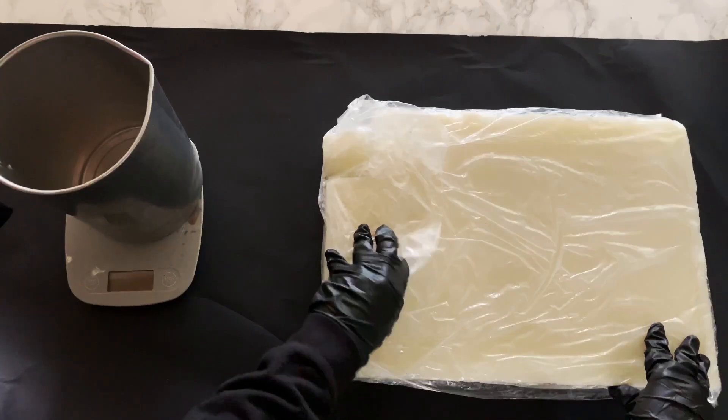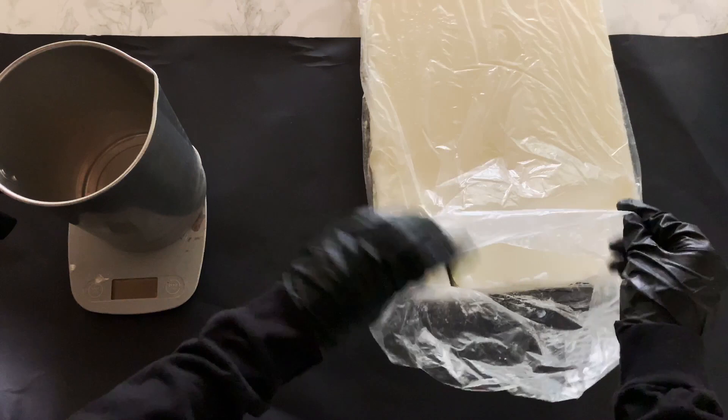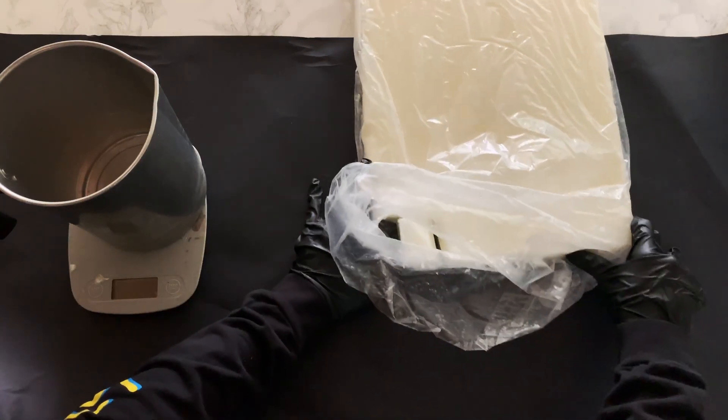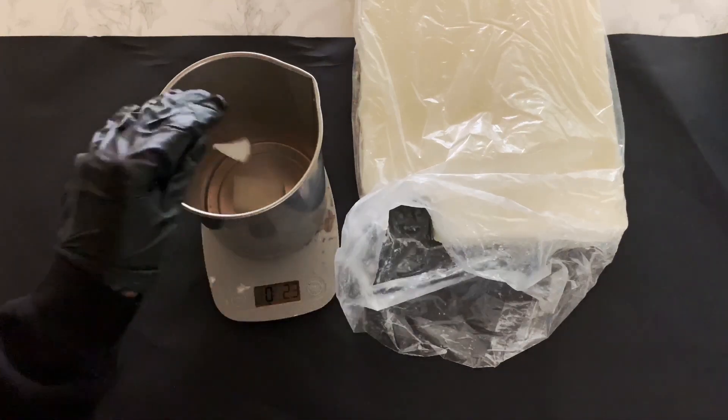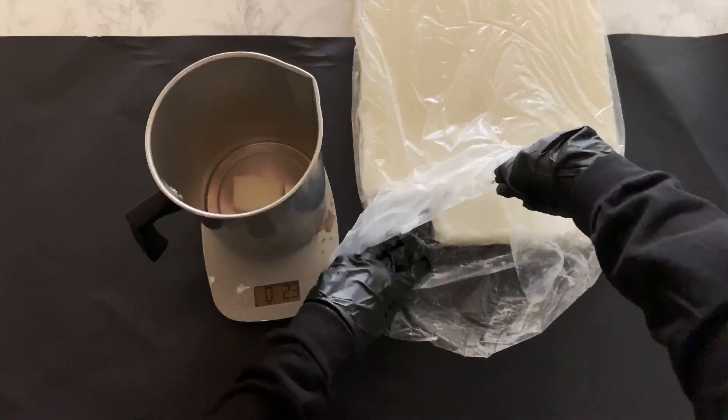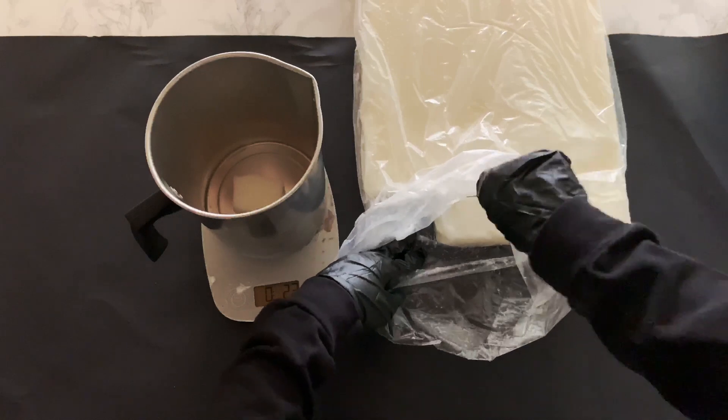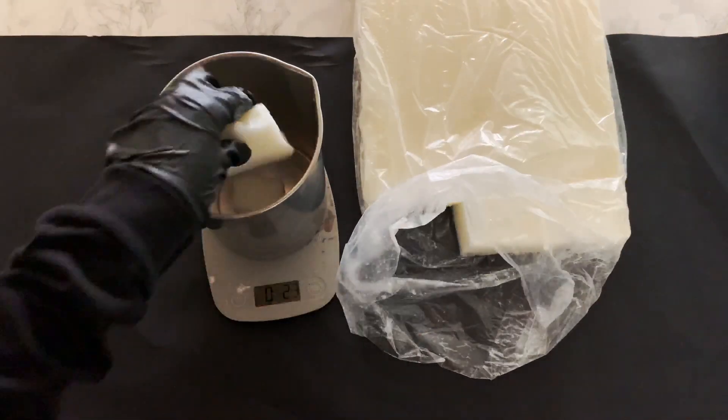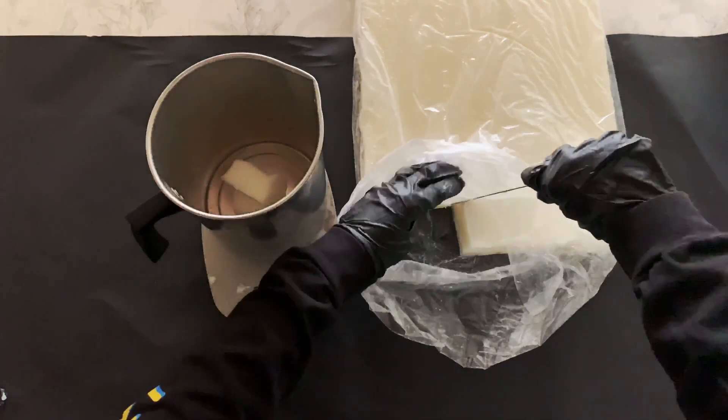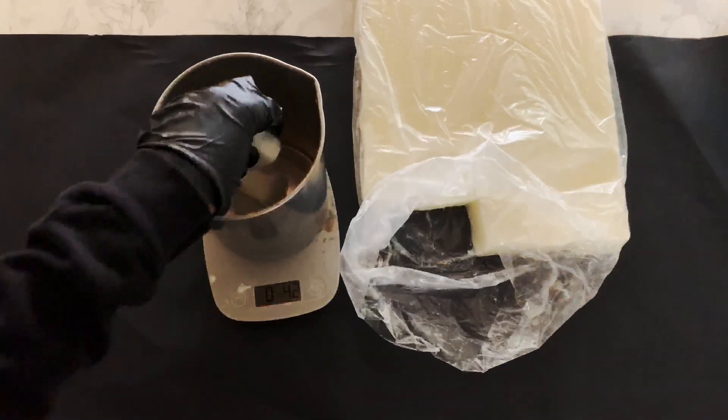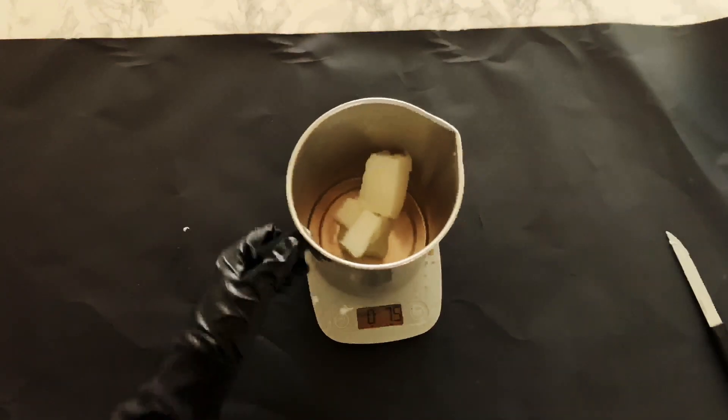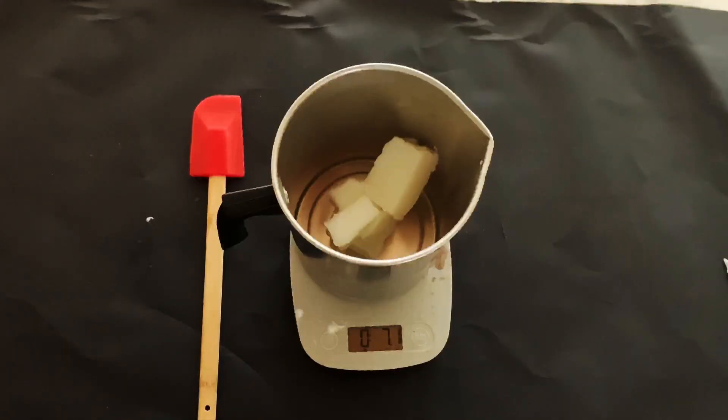So first, we're going to take our pitcher and our wax and our scale and we're going to start cutting up the wax. If you've used soy wax before, you might be used to flakes, but this wax comes in a 10-pound block and you need to cut it or chop it up. This wax is actually really soft, so it's easy to work with, but it does come in a block so it's not as convenient. And we're just dropping that in our pouring pitcher and weighing it so we know how much wax we're using.